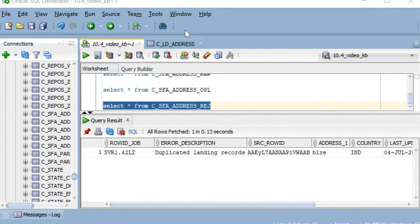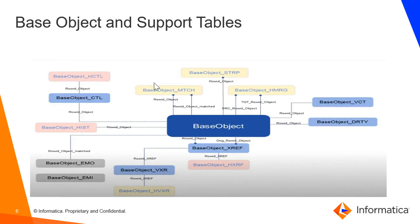So that's all about stage tables and their supporting tables. Now let us look at the tables created along with the base object. You can see tables with underscore H — those are the history tables, created only if we enable history for the base object. The XREF table stores the contributing records; if multiple versions of a BO record come from different source systems, they are stored here. The history of the XREF table is stored in HXREF. The dirty table stores all records that need to be tokenized — either newly created or updated. The VCT table stores validation rules for the BO.